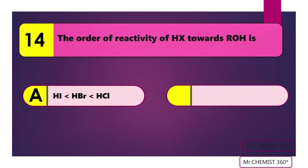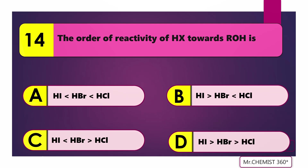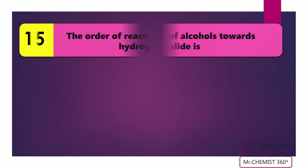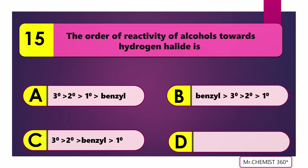Question 14: The order of reactivity of HX towards ROH is? Answer: HI greater than HBr greater than HCl. Question 15: The order of reactivity of alcohol towards H₂O is? Answer: Benzyl greater than tertiary, greater than secondary, greater than primary.